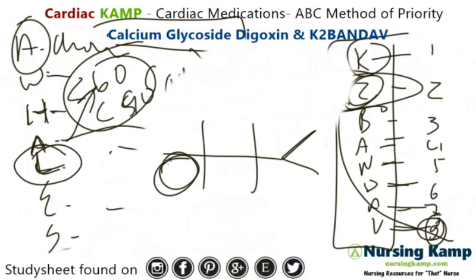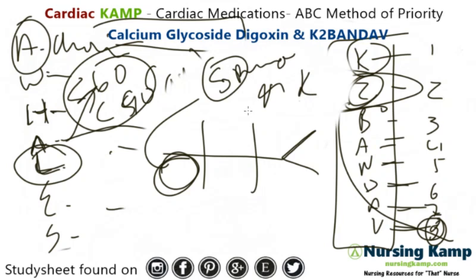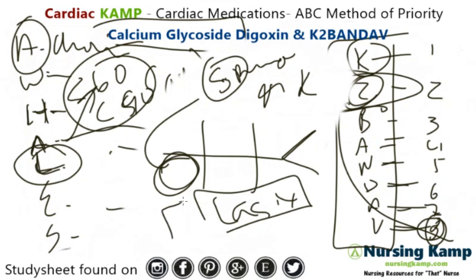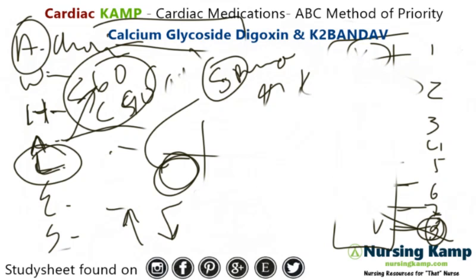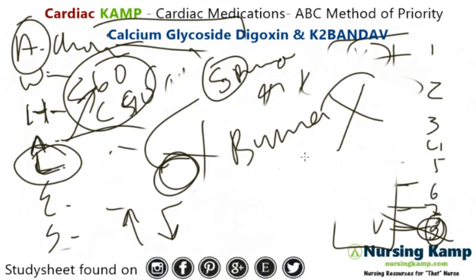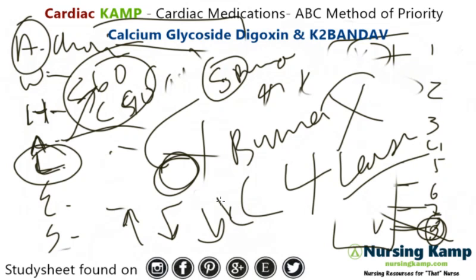A patient on digoxin and Lasix is a problem, because Lasix is going to decrease the potassium and then cause dig toxicity. And Bumex is worse — Bumex is four times Lasix. That's also very bad because it will decrease potassium significantly.